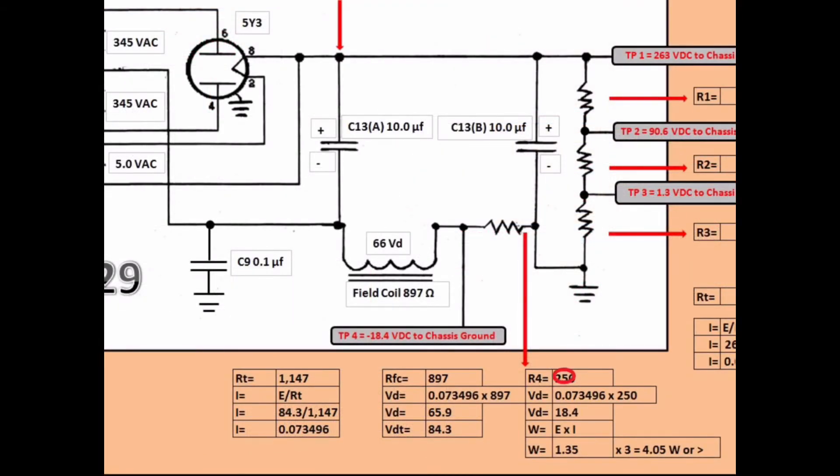To calculate that bottom section, I'm going to take the same formulas that I used above. I'm going to look at the total resistance. I'm going to look at R4, which is 250 ohms. I've got the DC resistance of the field coil, which measures 897, and a total, which is represented by RT of 1147.